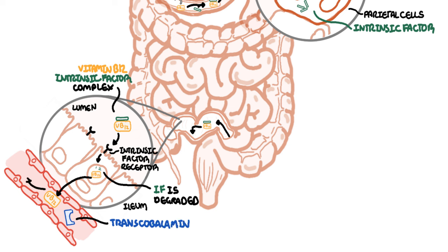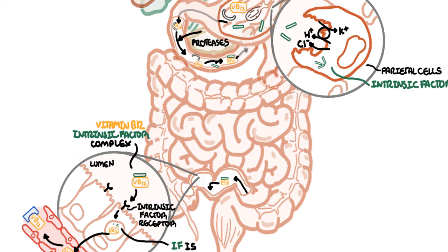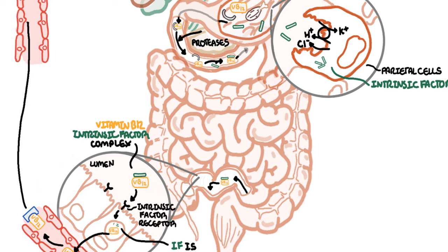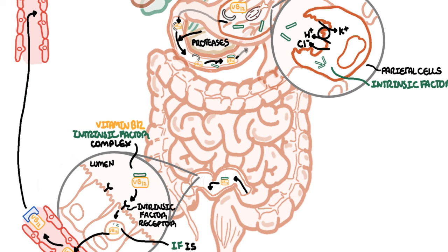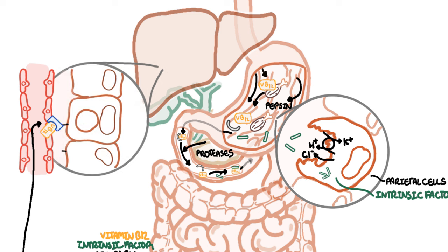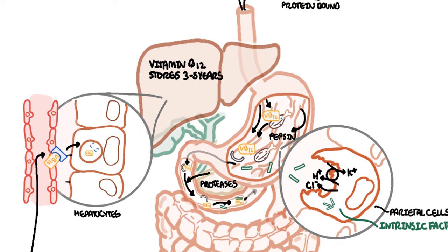Vitamin B12 bound to transcobalamin is taken up by other cells throughout the body by receptor mediated endocytosis. For example, the vitamin B12 is taken up by the liver cells. The liver is an important organ because it stores vitamin B12 for up to three to five years worth. If someone completely stops absorbing vitamin B12, signs of deficiency do not typically show up until two to three years later.